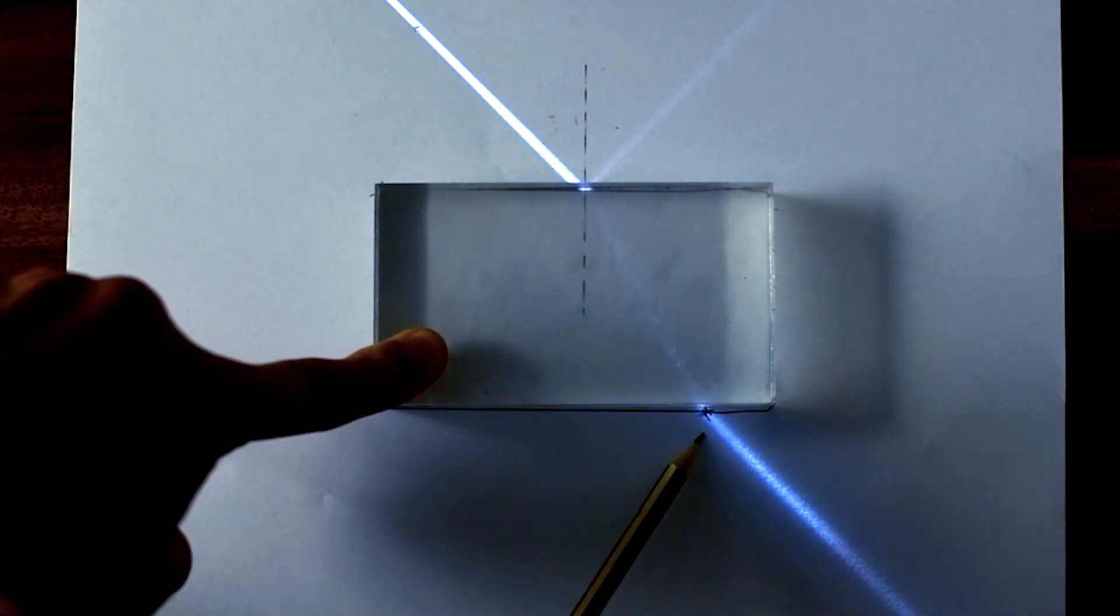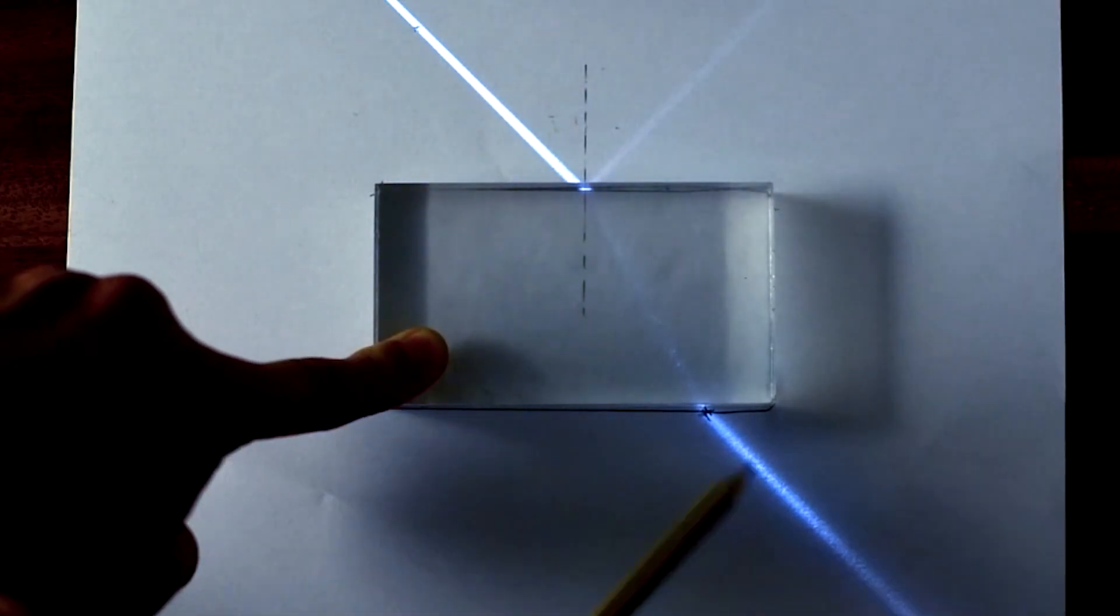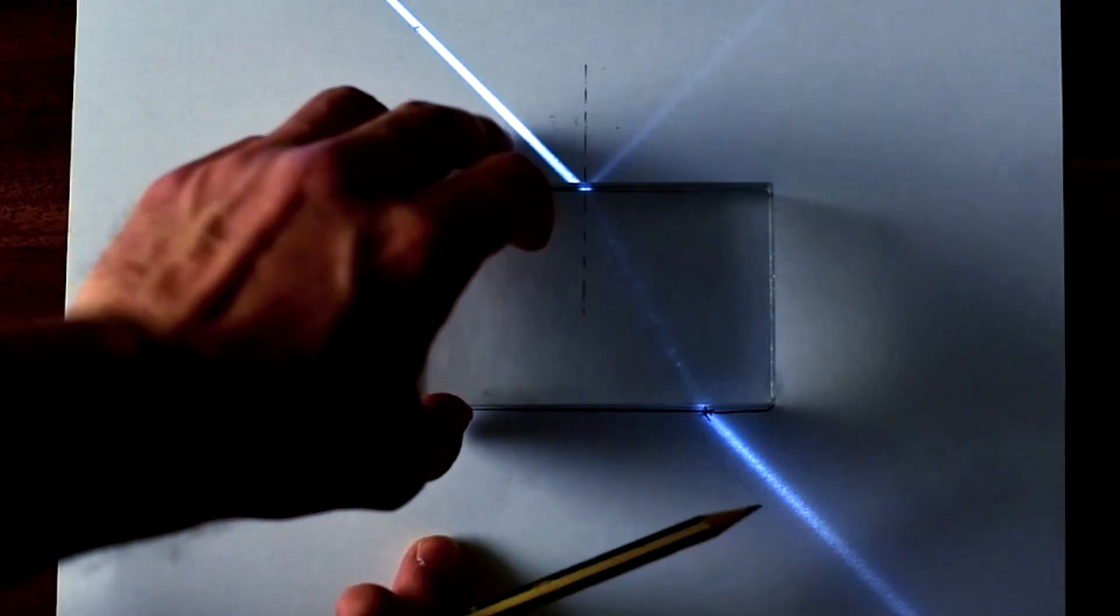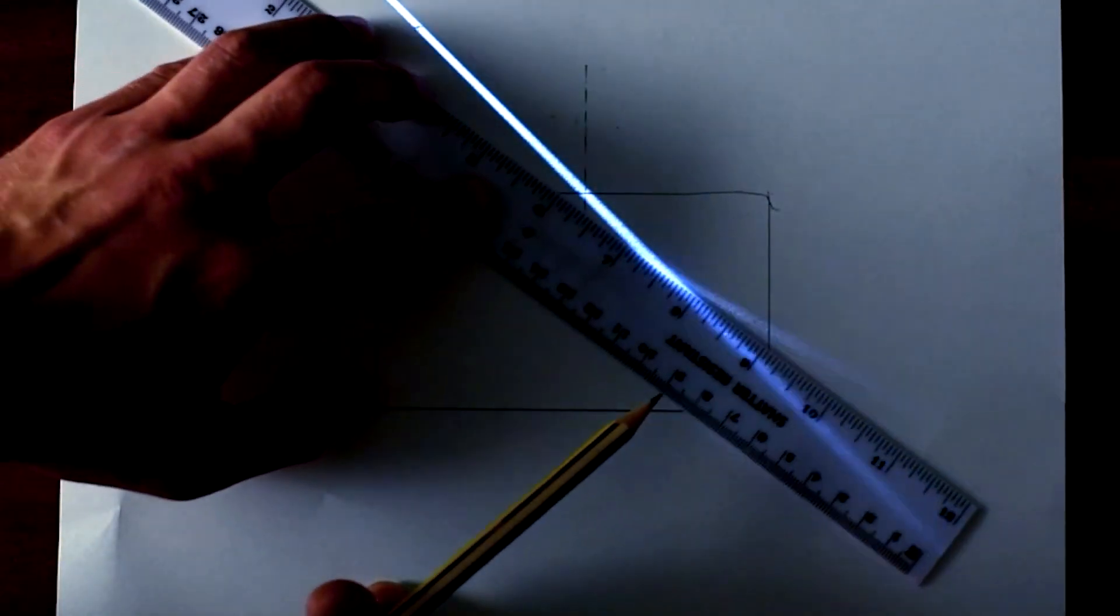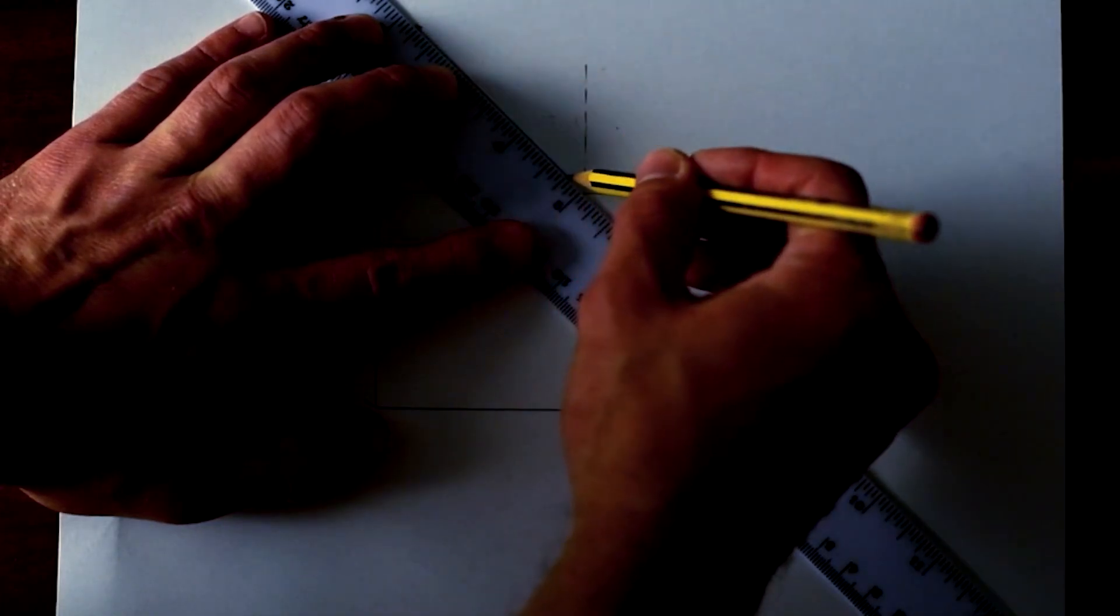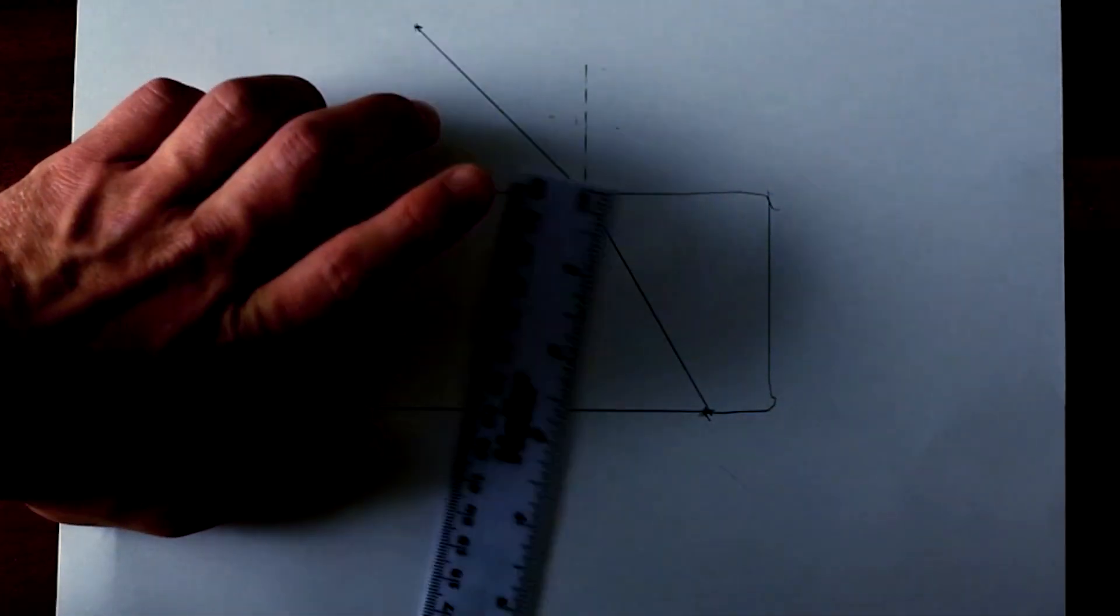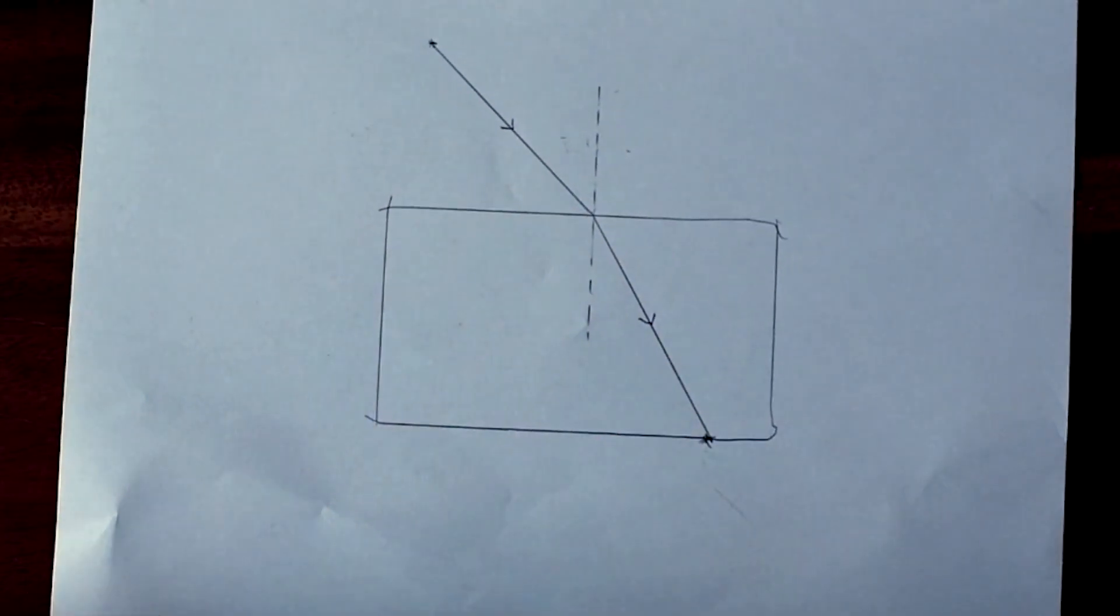But then as it refracts out, the opposite happens. We have equal refraction going on here and here, so these two rays are parallel. But we're not concerned about that too much. So there we go, I can take my block off right now. And then I'm going to do just a nice dot to dot.